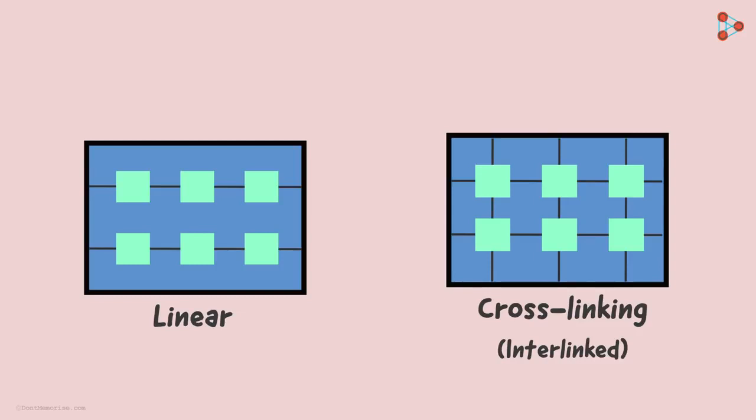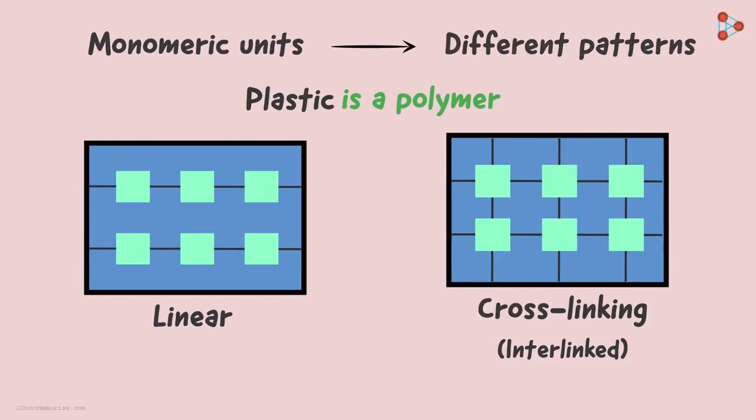But why are we studying these now? We know that plastic is a polymer. Now the various monomeric units in the different plastics are arranged in different patterns. And what would these patterns be? Yes, they are either linearly arranged or they are arranged in a cross-linked manner.